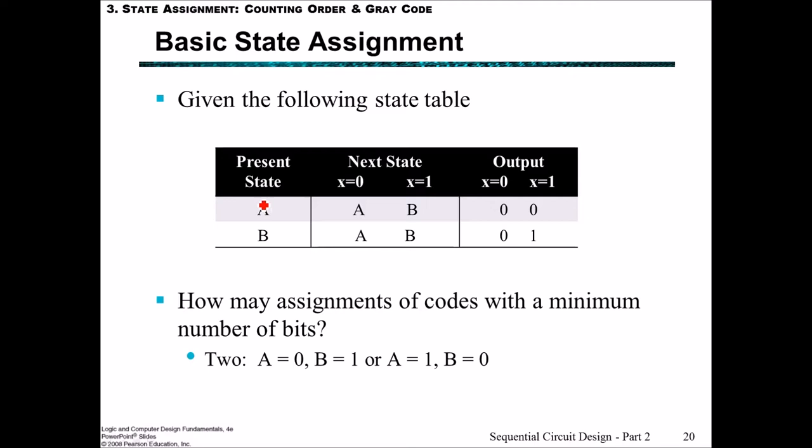Let's think about this very simple state table where we have two states A and B. We move to B if we get a 1 giving an output of 0. From B we move to A if we have an input of 0 with an output of 0, and we stay in B if we have an input of 1 and we get an output of 1. But the question is how many bits do we need to represent these states? We need 1 bit to represent these two states.